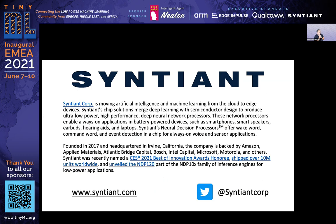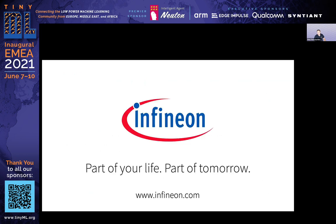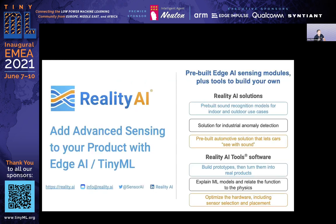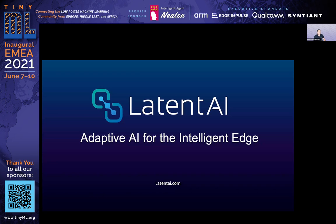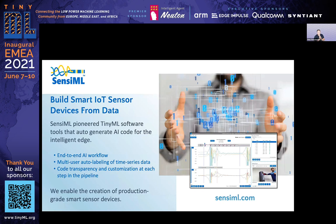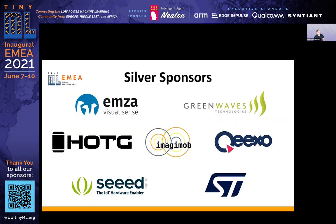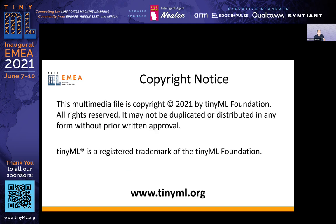Platinum sponsors include Infineon — part of your life, part of tomorrow — and Reality AI, working on pre-built edge AI sensing modules and tools. Gold sponsors are Latent AI, working on adaptive AI for the intelligent edge, and SenseML, building smart IoT sensor devices from various data. Silver sponsors are EMSA from Israel, Green Waves, HOTC, Magimop, Quixo, Seed Studio, and ST Microelectronics.